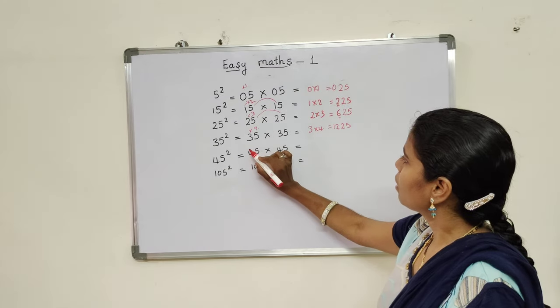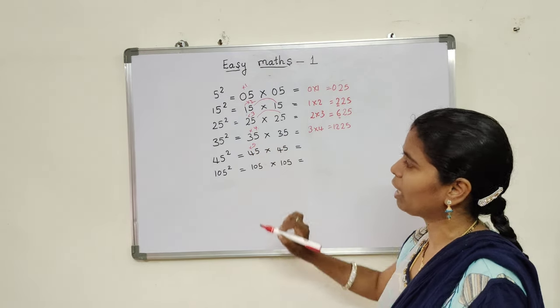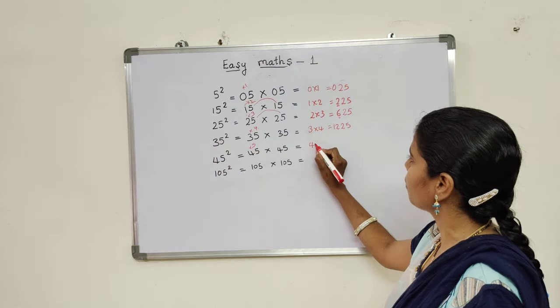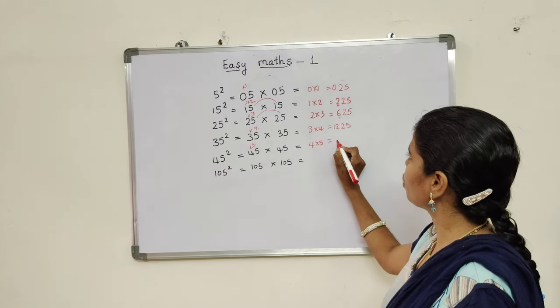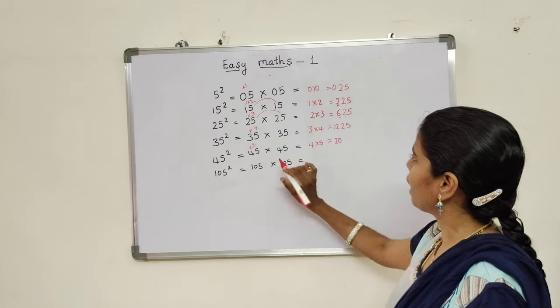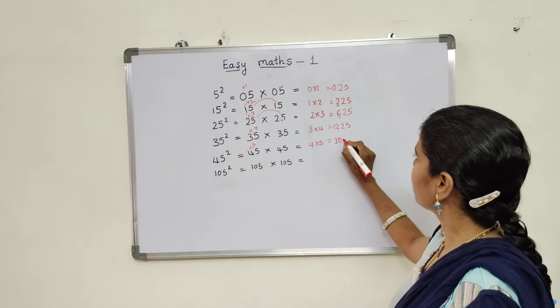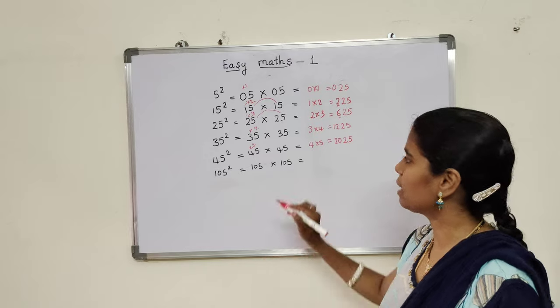Next, 45 square. The number which is higher than 4 is 5. Multiply 4 fives, which is equal to 20, and 5 fives are 25. That is the answer.